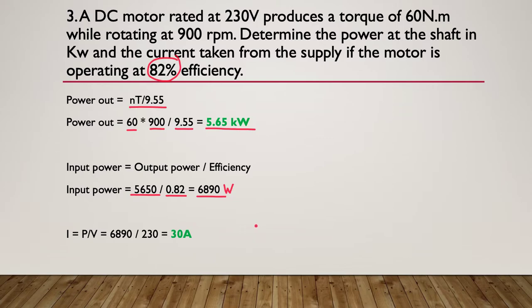Of course, we want to find out what that current is. So it's down to Ohm's law. I equals the power divided by the voltage. So here's our power in divided by our voltage, which was given to us in the question, and it rounds out to a nice 30 amps. So 5.65 kilowatt output power and 30 amps input.